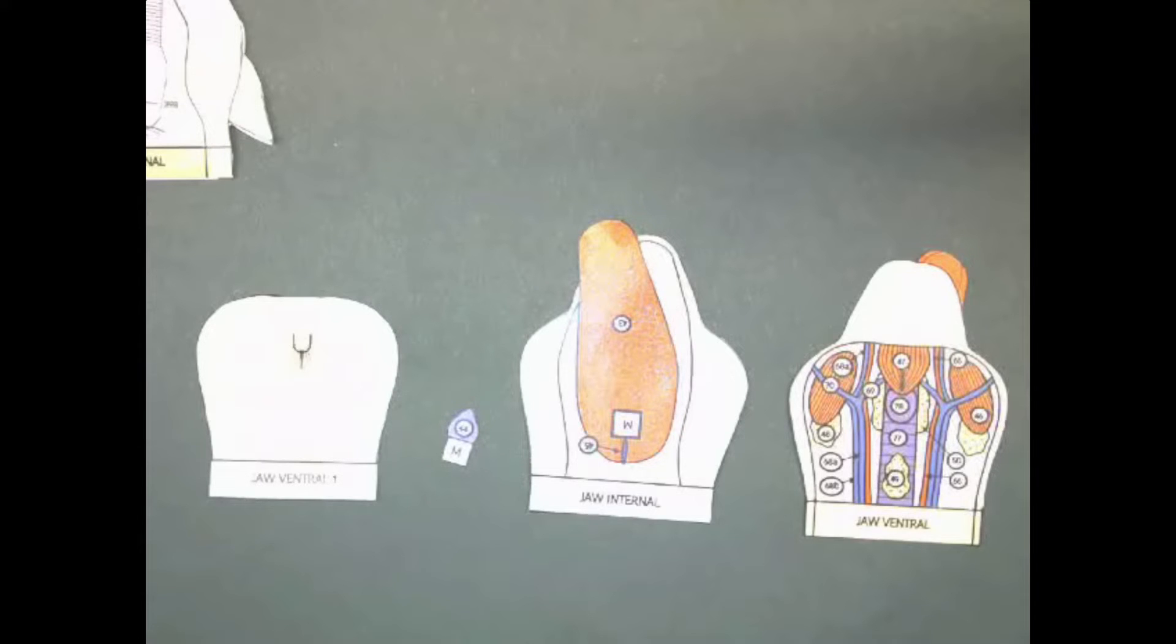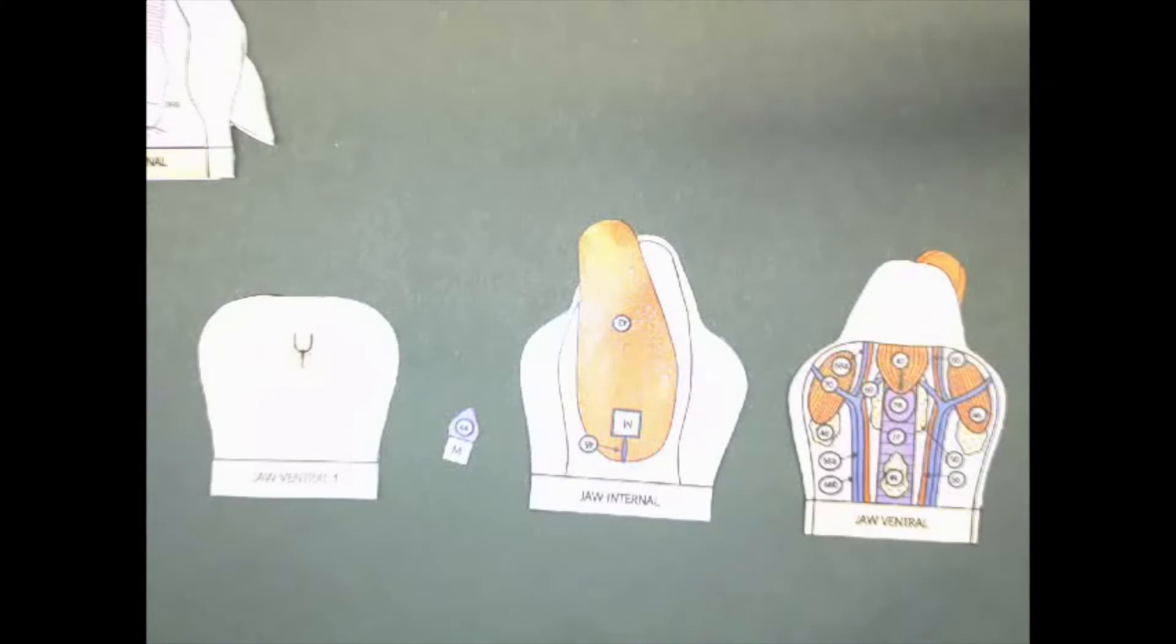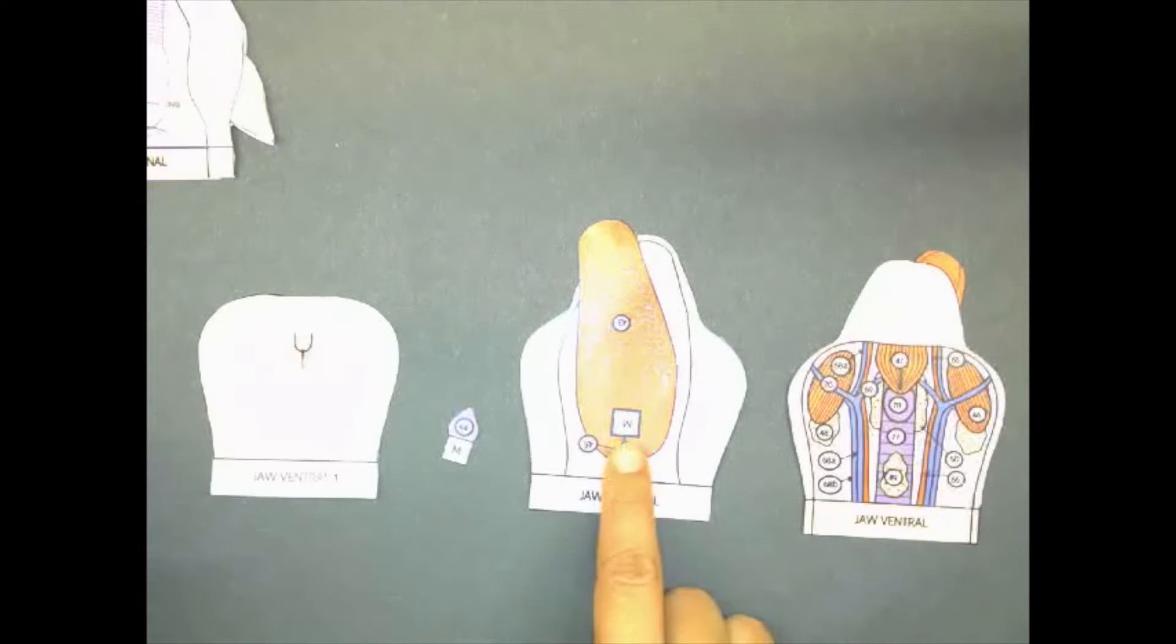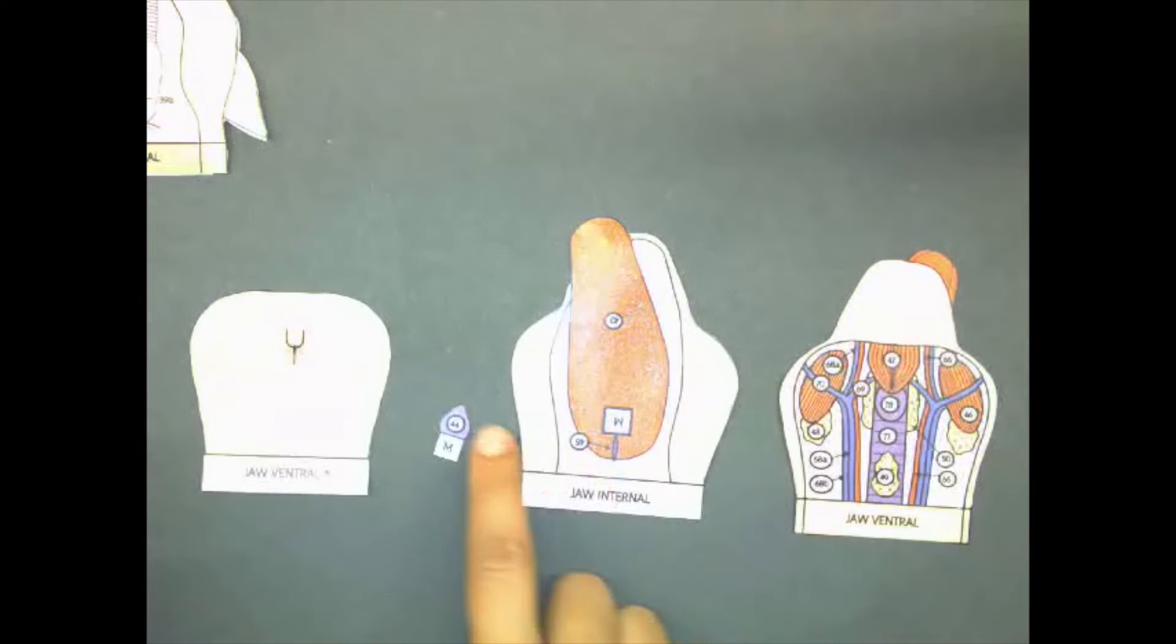The first thing we're going to do is take a look at jaw internal. There's a box labeled M as in mom, put some glue in it, and we are going to put our little piece that's purple and it's also labeled M on top of it.